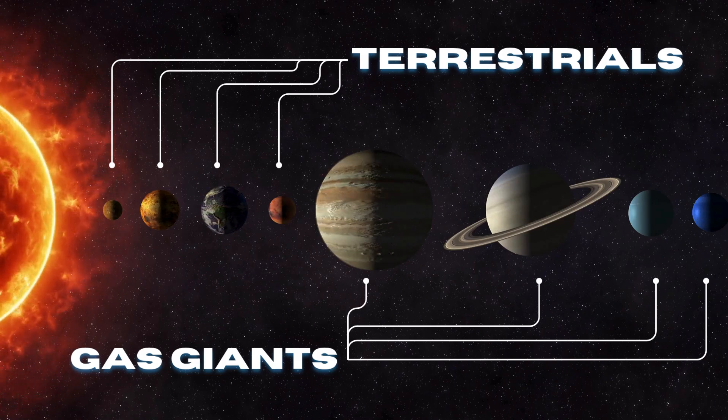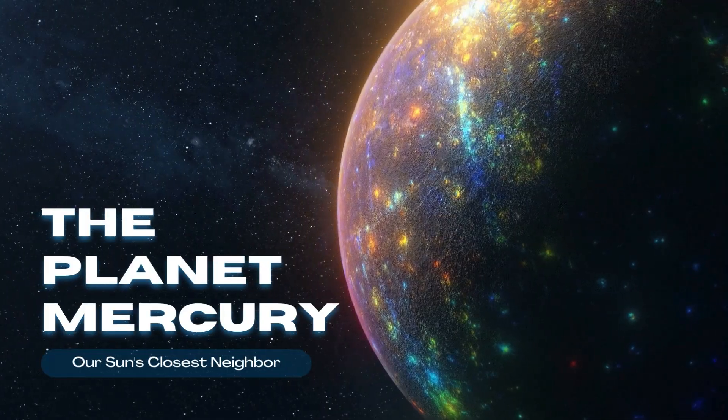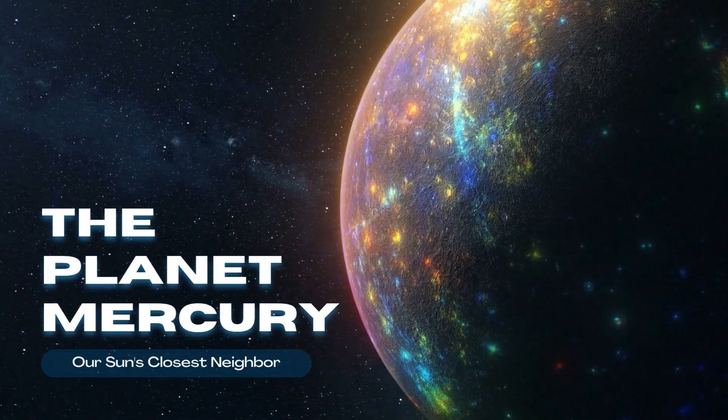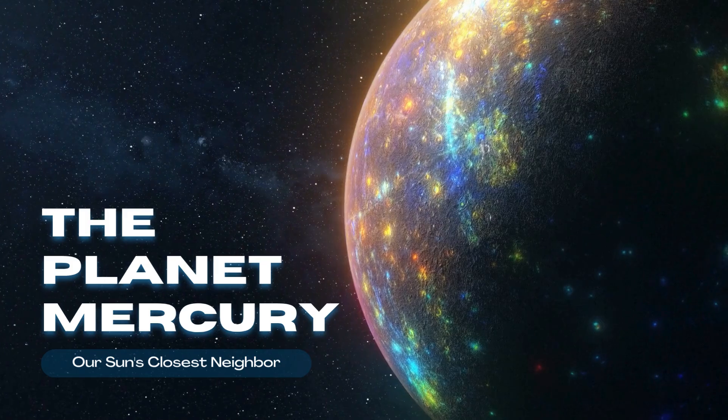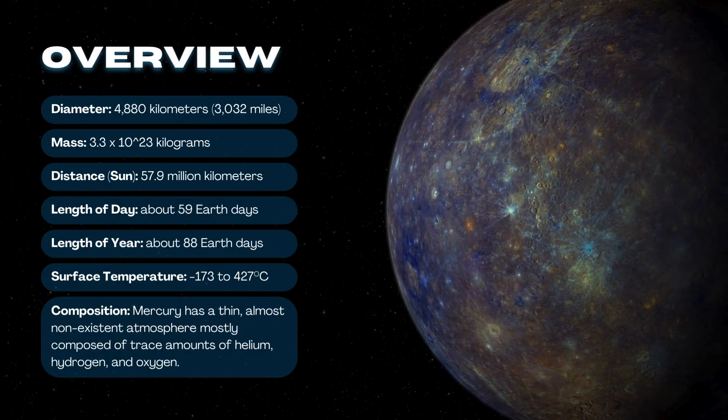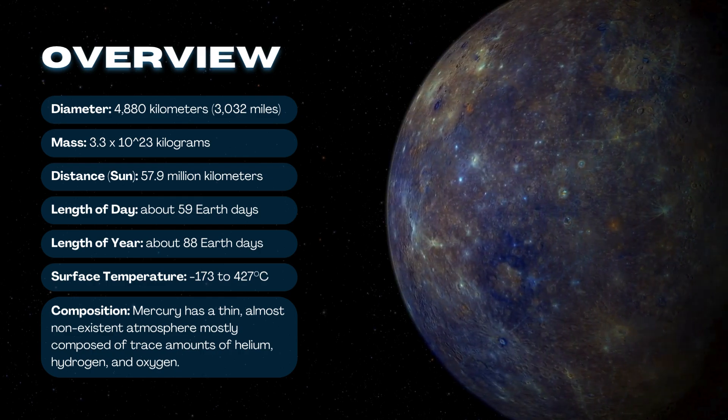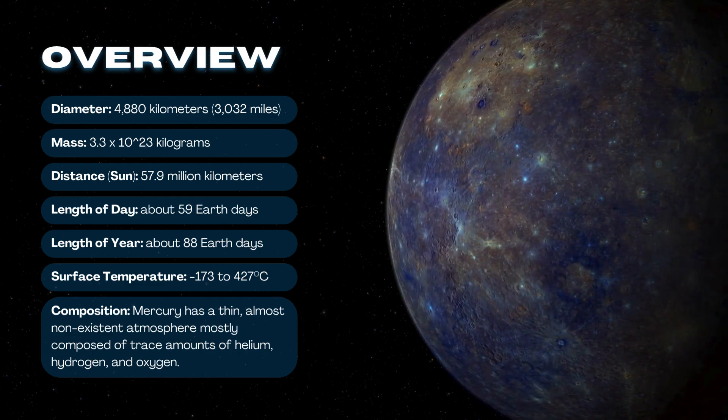Terrestrials and gas giants. The planet Mercury, our sun's closest neighbor. Composition: Mercury has a thin, almost non-existent atmosphere mostly composed of trace amounts of helium, hydrogen, and oxygen.